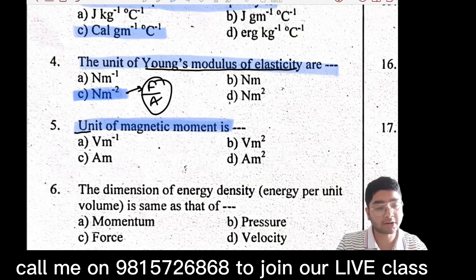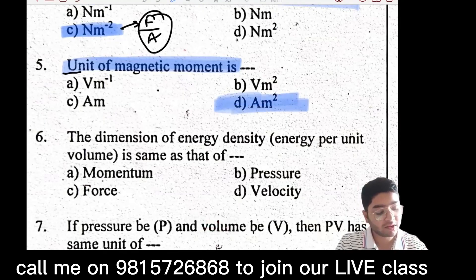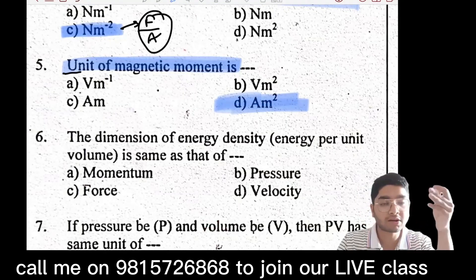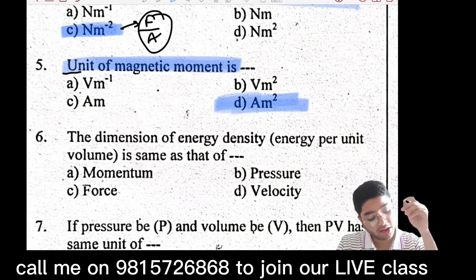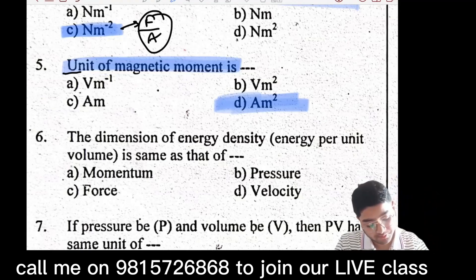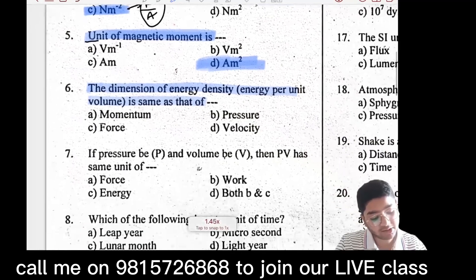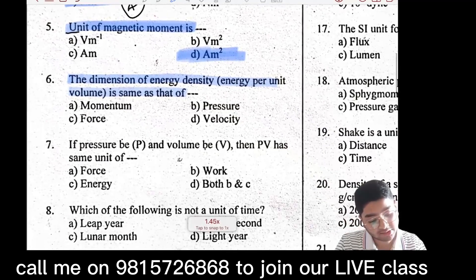The unit of magnetic moment — the unit of magnetic moment is Ampere·meter². The dimension of energy density: energy density is energy upon volume.